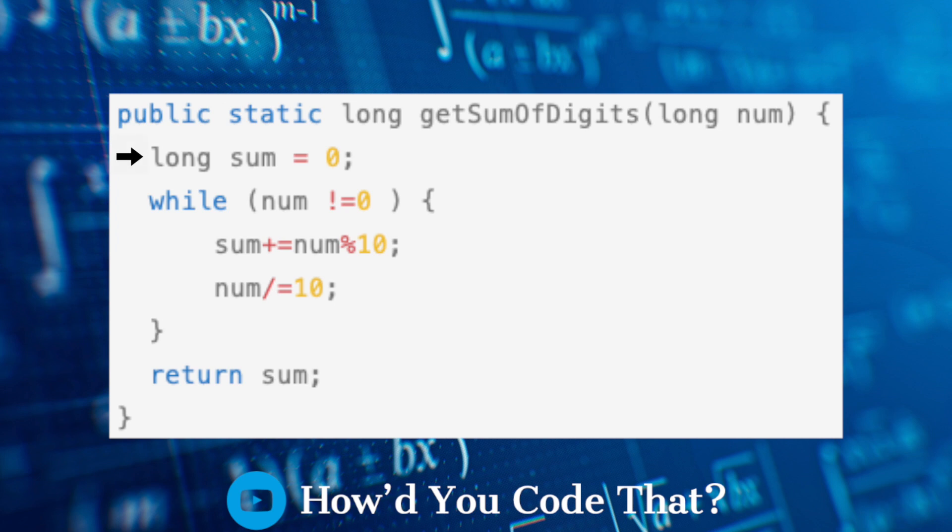Inside the getSumOfDigits helper method, the variable sum is initialized to zero. While the value of our number is not equal to zero, the variable sum is incremented by the value of the last digit in our number.